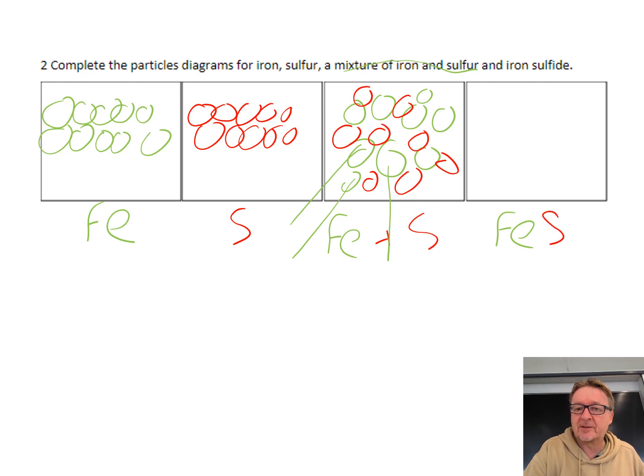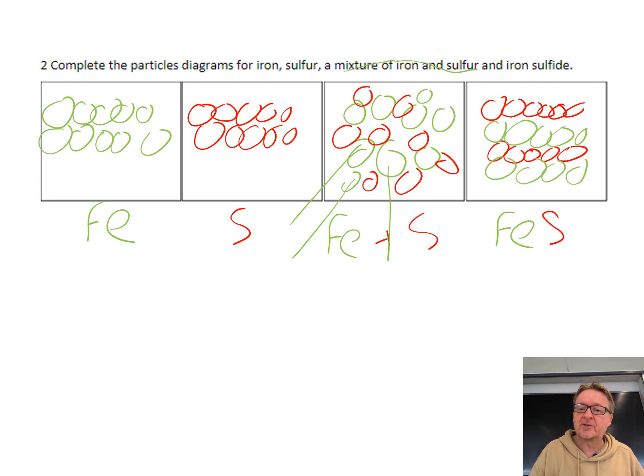Iron sulfide FeS is where they're chemically combined. They will be in nice rows and all chemically combined together, all stuck together. If you get a magnet next to it, it will just take the whole thing.